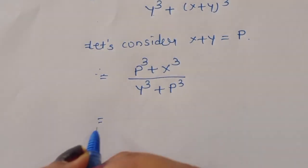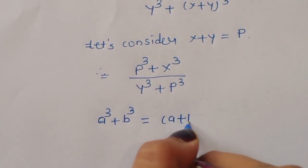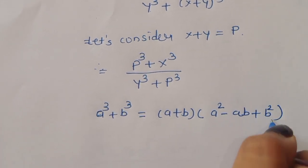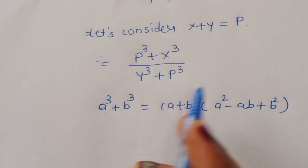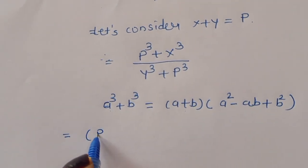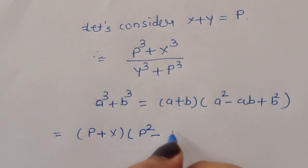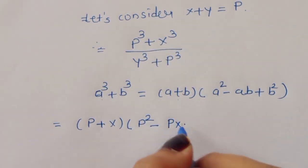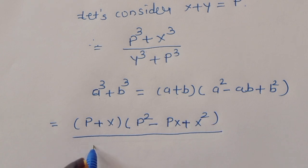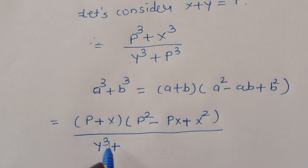We know the formula: a³ + b³ = (a + b)(a² − ab + b²). Using this formula, p³ + x³ becomes (p + x)(p² − px + x²), and y³ + p³ becomes (y + p)(y² − py + p²).